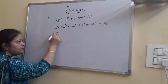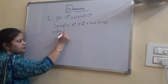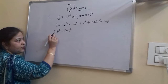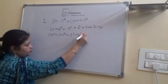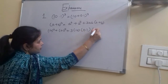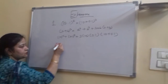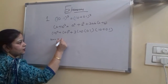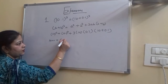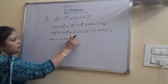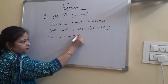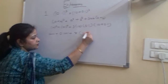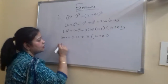Here the value of a is 10 and the value of b is 0.1. Applying the formula: a cube plus b cube plus 3 into a into b into a plus b. Cube of 10 is 1000, cube of 0.1 is 0.001. Now, 3 into 10 into 0.1 is 3, multiplied by 10 plus 0.1.